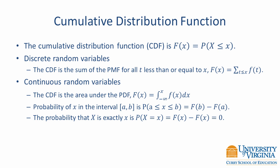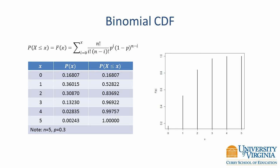Let's return to the binomial distribution for an example of a discrete CDF. The binomial CDF is shown on the slide and looks similar to the binomial PMF — the only difference is that a summation sign has been included in the equation. Values for this binomial CDF have been added to the third column of the table. The probability of three or fewer students answering the item correctly is 0.96922. Conversely, the probability of four or five students answering it correctly is 1 minus 0.96922, or 0.03078. All CDFs will increase as the values increase.